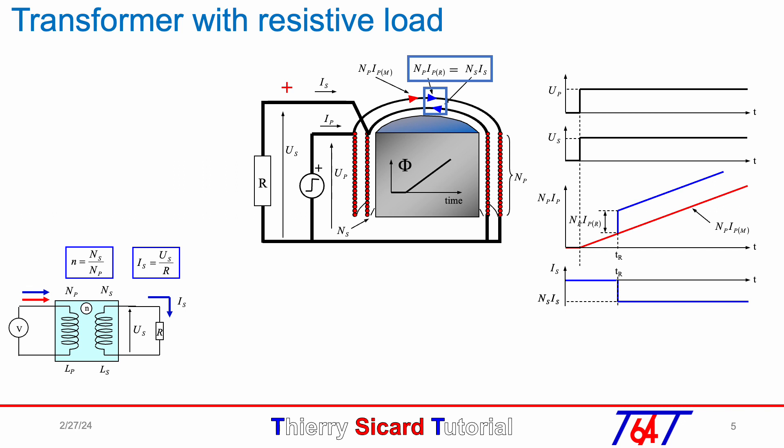So the secondary current N_S times I_S must be cancelled by the same amount of current in the opposite way, N_P times I_PR, noted I_PR because it is a primary current but linked with the resistor R. On the primary side, the current will be the sum of the current in the primary inductance L_P plus the current which supplies the resistance on the secondary.